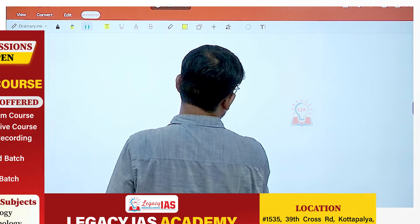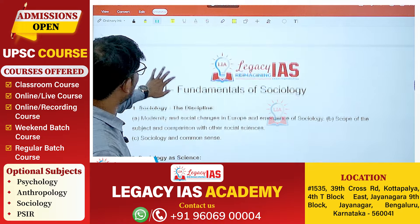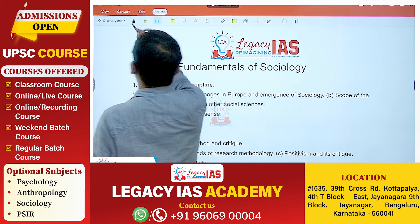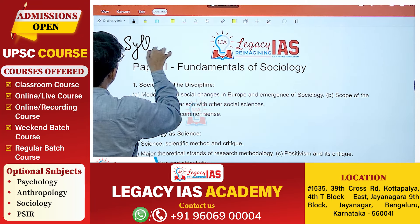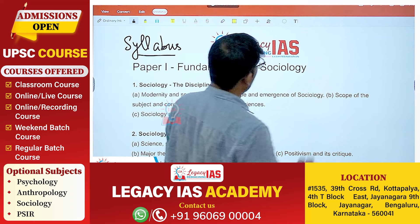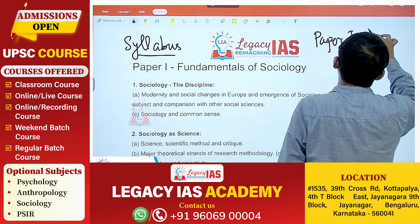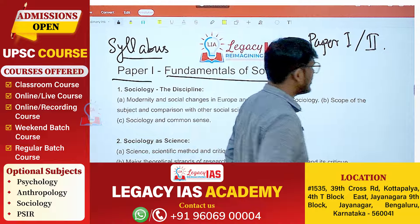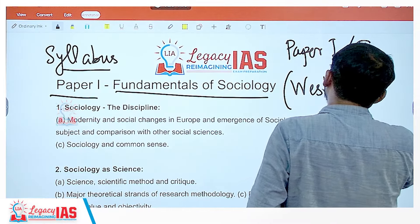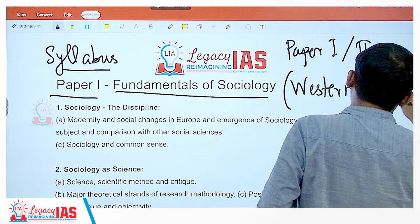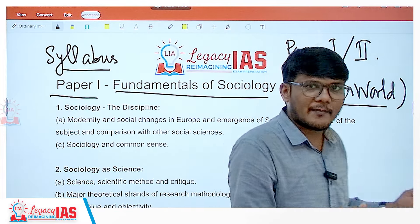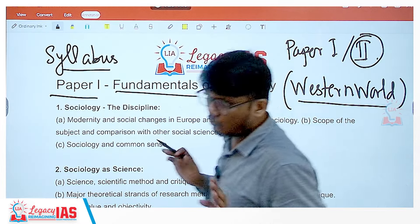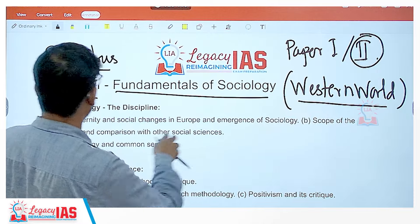We have established why sociology is important. Now let's go into preparing sociology as an optional — its approach, strategy, books, and syllabus. Let's start with the syllabus. You will have two papers: paper one and paper two. Paper one, titled 'Fundamentals of Sociology,' deals with the western world. Paper two, on the other hand, deals with Indian society.